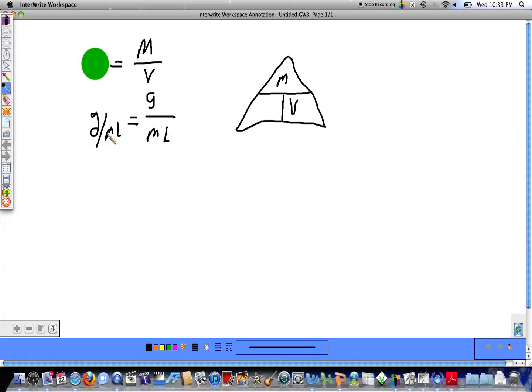Then I'm going to uncover the left side and whatever's left goes in whatever hole's left in the triangle. So, that's going to go in this bottom right hole. So, my density goes there.